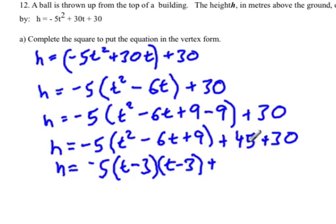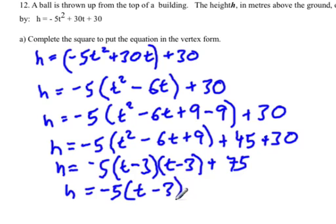And then 45 plus 30 is 75. And so then this is h is equal to negative 5 times t minus 3 squared. And you're always trying to get a binomial squared when you're trying to put it into vertex form. Plus 75.